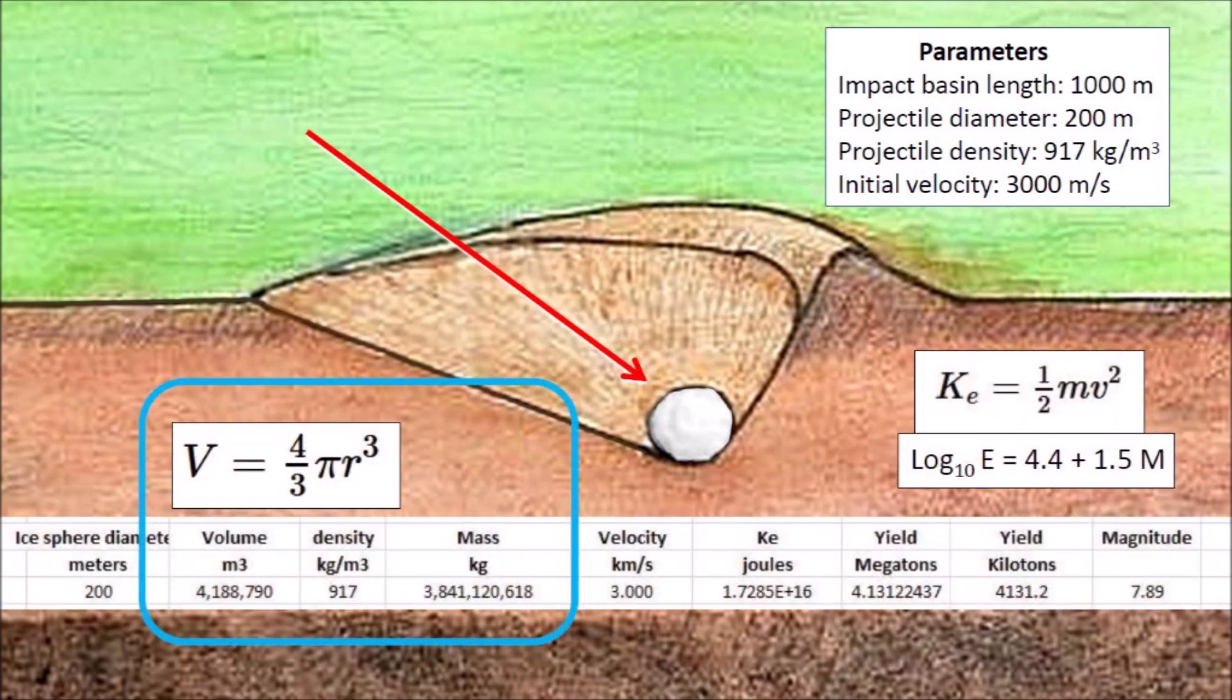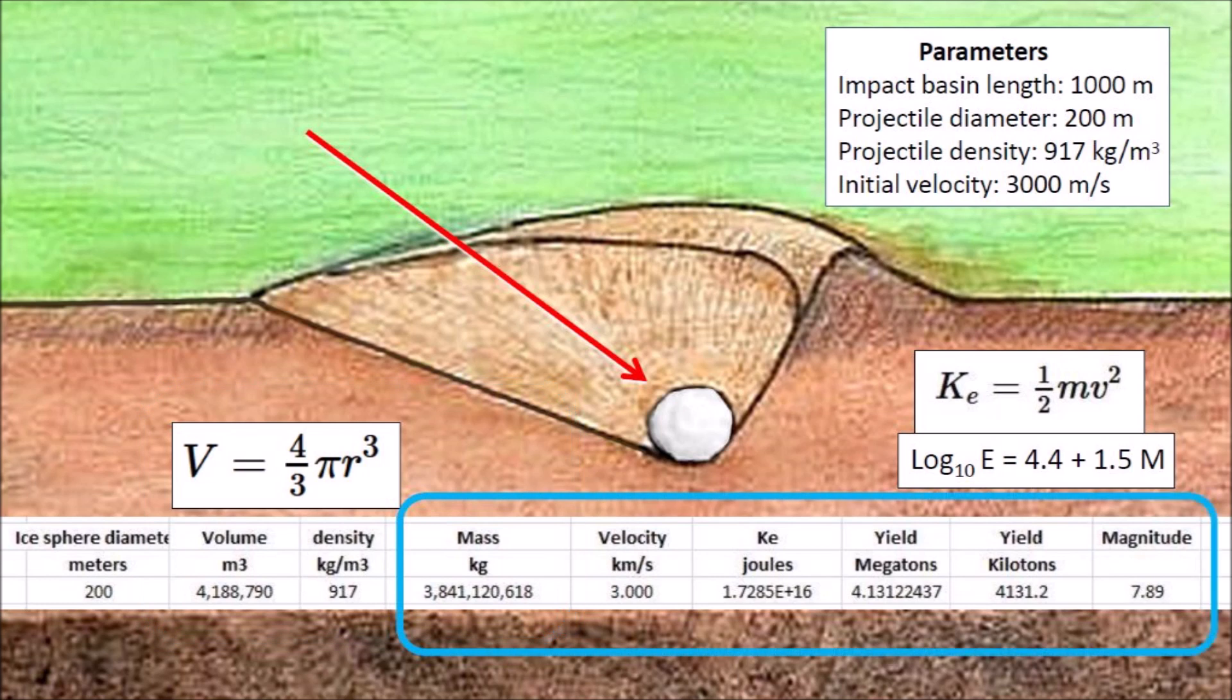Using the formula for the volume of a sphere, we calculate that an ice sphere with a diameter of 200 meters has a volume of 4.1 million cubic meters. Multiplying by the density of ice of 917 kilograms per cubic meter, we find that the mass of the ice boulder is more than 3.8 billion kilograms. The kinetic energy in joules is obtained by multiplying one half of the mass times the velocity squared. The kinetic energy of a 200 meter ice projectile traveling at 3000 meters per second is equivalent to the explosive power of 4.1 megatons of TNT, which corresponds to an earthquake of magnitude 7.89.